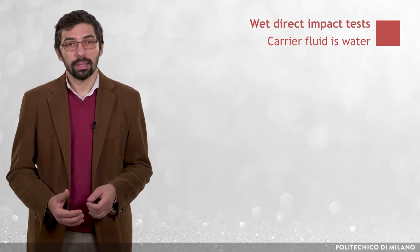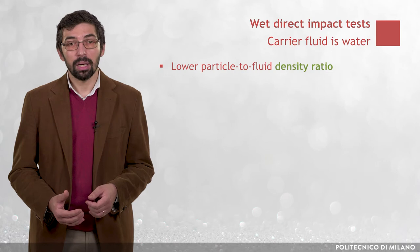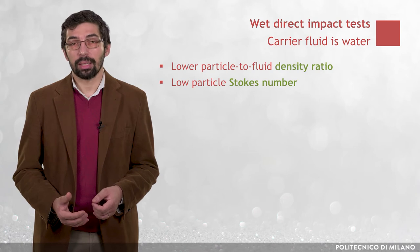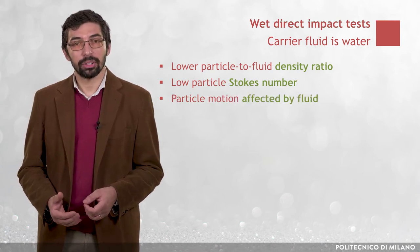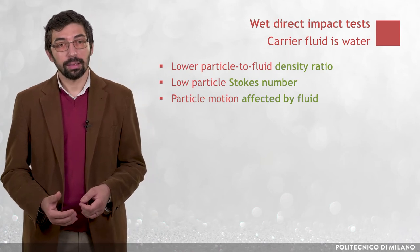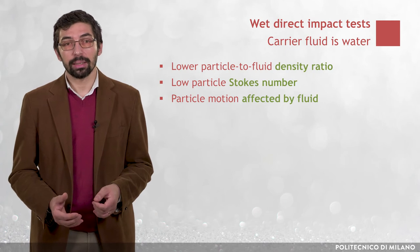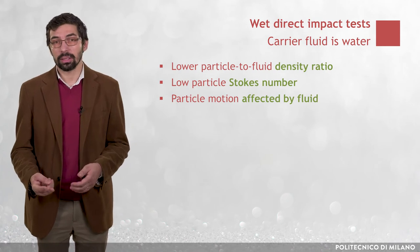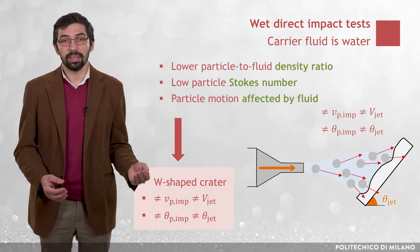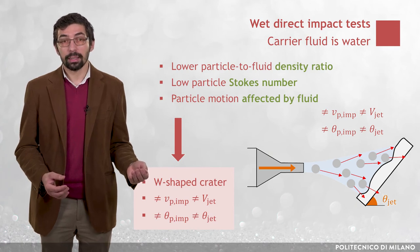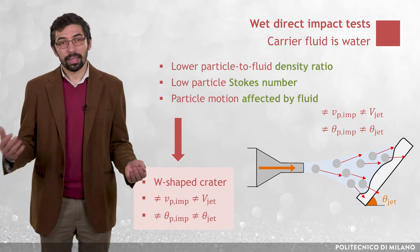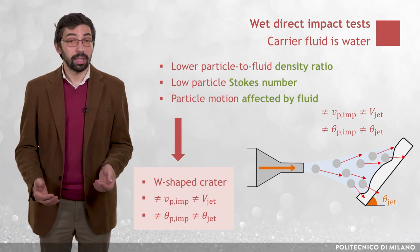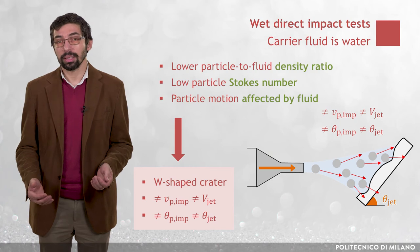In wet tests, the densities of the solid particles and of the carrier liquid are of the same order of magnitude, resulting in relatively low particle Stokes numbers. As a result, the particles are affected by the surrounding liquid, tending to spread around the high-pressure region occurring where the nozzle axis intersects the sample. This has two important consequences: first, few particles hit the sample in the center, resulting in a characteristic W-shaped erosion profile; and second, there exists a wide range of particle impact velocities and particle impact angles, which are a priori different from the jet bulk mean velocity and the nozzle-to-specimen angle.